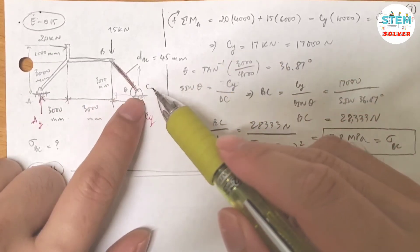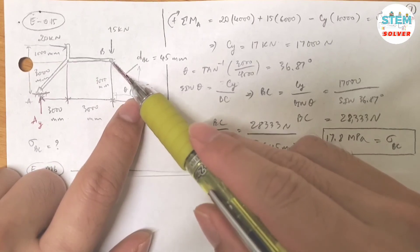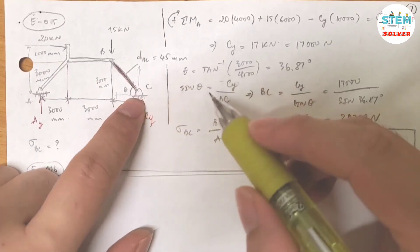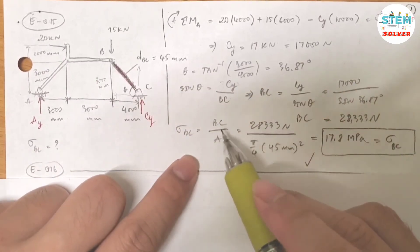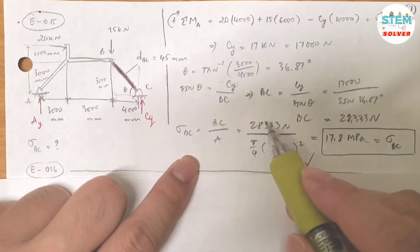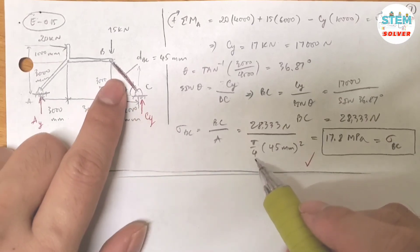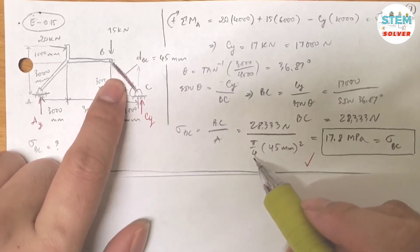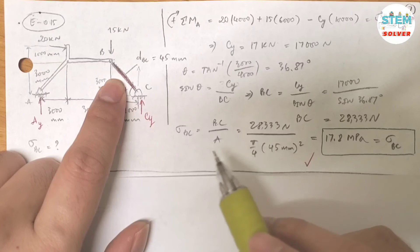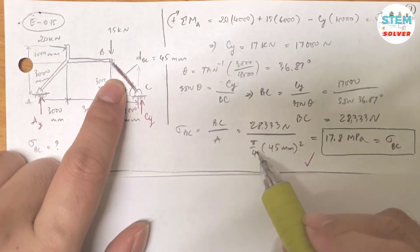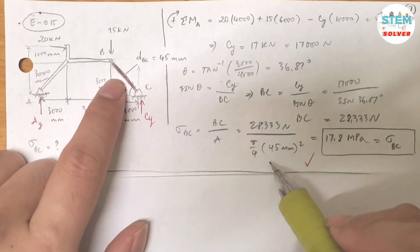Now the normal stress in member BC is equal to the normal force BC divided by the area of BC. So the normal force BC is what we just found, 28,333 newtons. The area of BC is equal to, so this is a cylindrical member, so the area is pi over 4 times diameter squared.